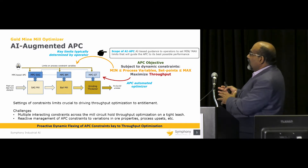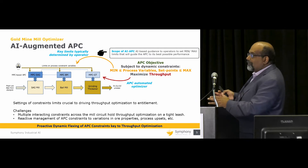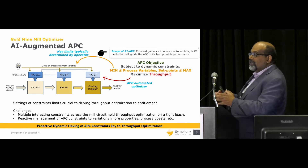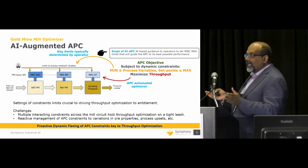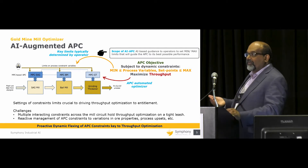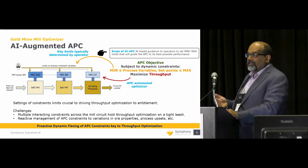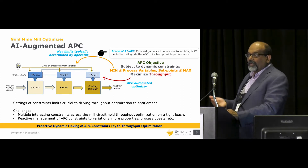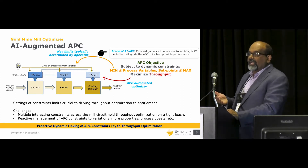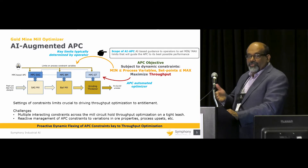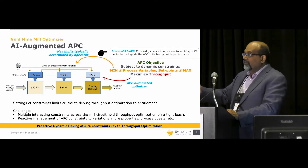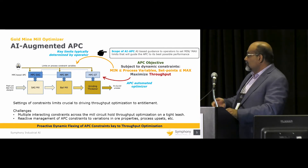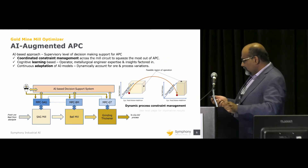The AI-driven APC would provide guidance to operators to set the min and max. You're providing an advisory — not directly controlling it, but advising on what the min and max should be. That naturally pushed the min and max to the right-hand side and increased the throughput.